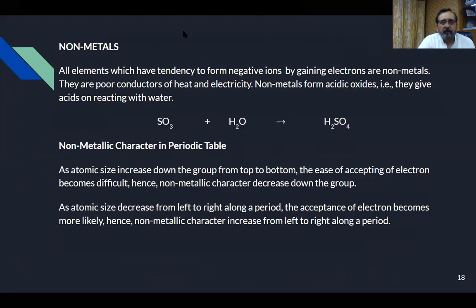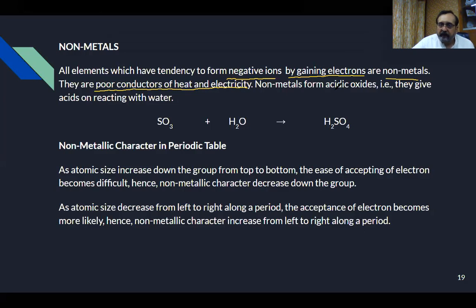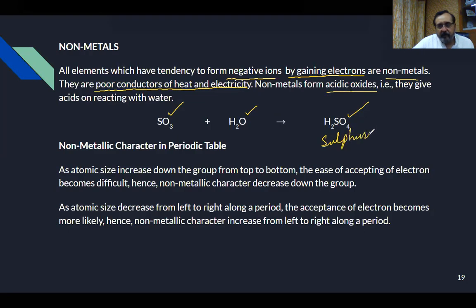What are non-metals? Non-metals are elements that prefer to form negative ions by gaining electrons. They are poor conductors of heat and electricity — the opposite of metals. Non-metals form acidic oxides; for example, sulfur trioxide is an acidic oxide, which dissolved in water forms sulfuric acid, H₂SO₄.